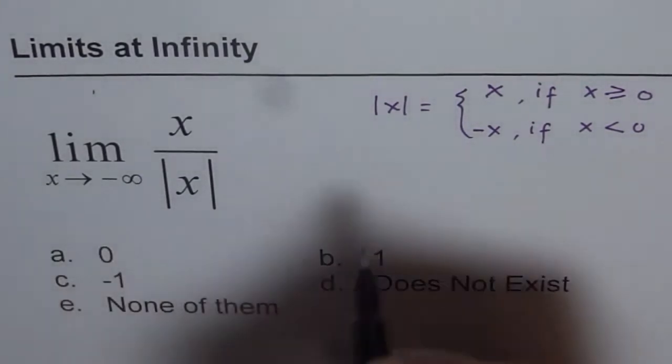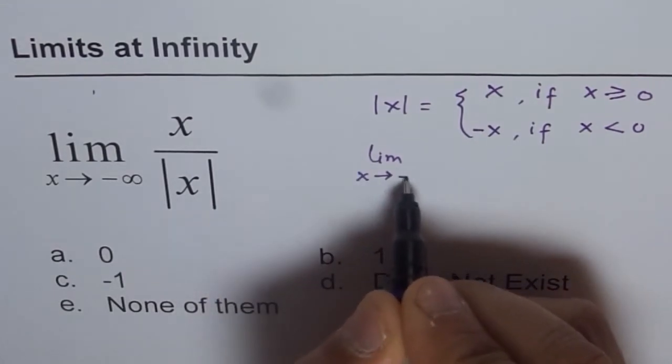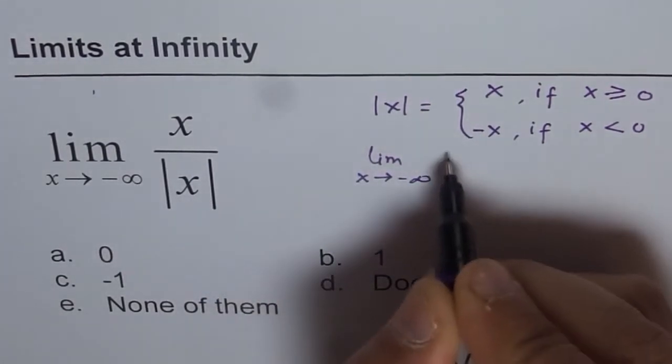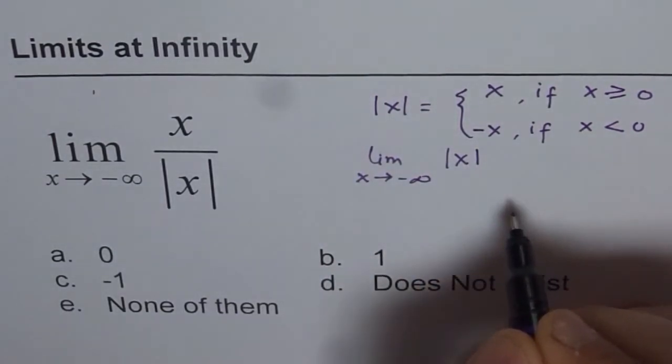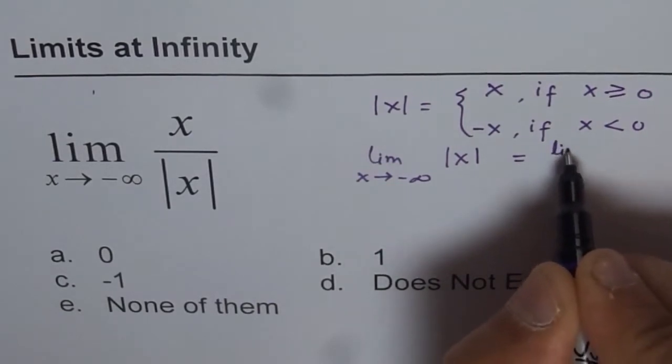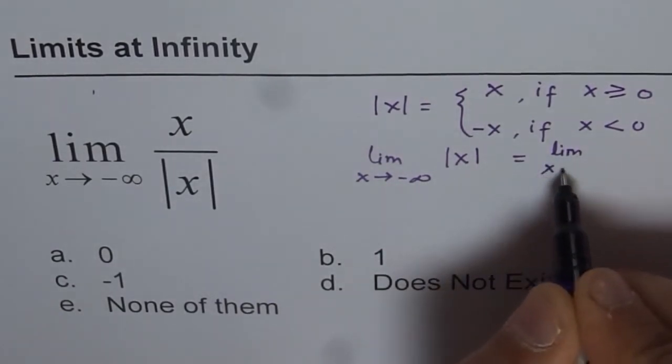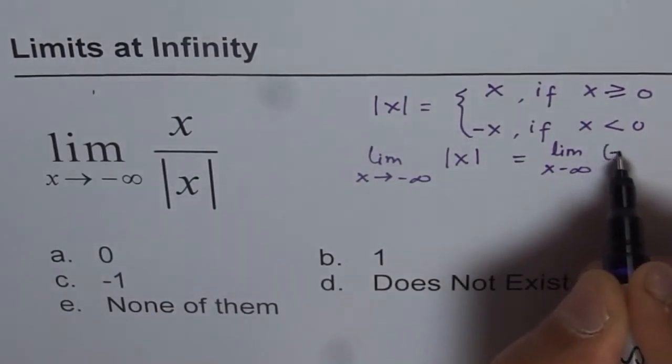Since we are checking the limit as x approaches minus infinity, for absolute x, what will it be equal to? That is equal to the limit as x approaches minus infinity, so we have to consider minus x in that.